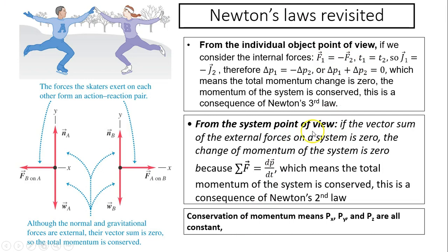From the system point of view, the vector sum of external forces is zero because the total force is just the normal force and gravity, and they cancel out each other. Therefore, the change in momentum has to be zero because the sum of external force equals change in momentum over change in time. If there is no change in momentum, that means momentum is conserved. This is a consequence of Newton's second law in terms of momentum. Conservation of momentum means momentum in the x direction, y direction, and z direction are all constant.